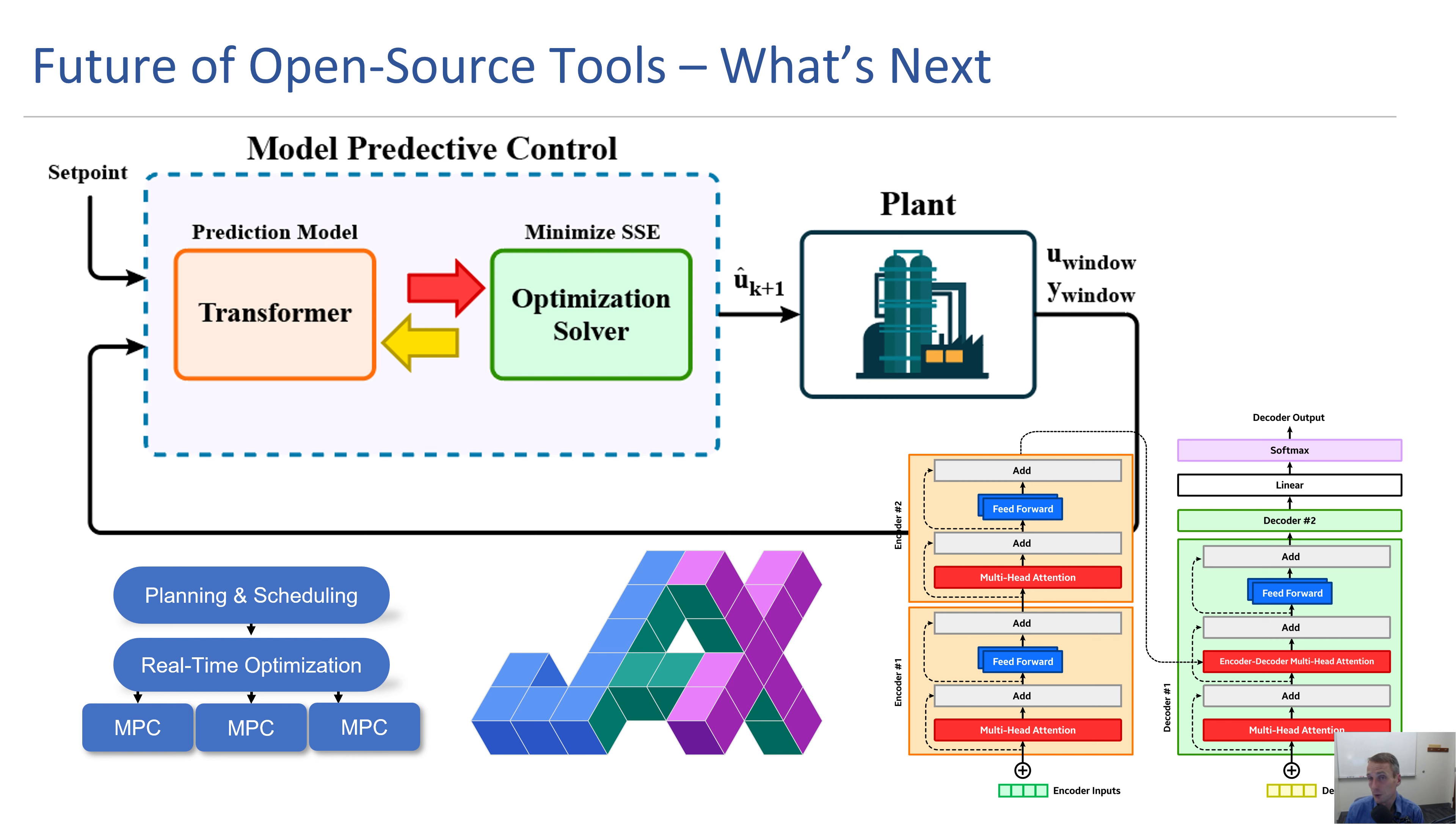As we talk about the future of open source tools, what's next, you have companies such as Google putting their development efforts behind platforms like JAX which are going to be significant players in the future. You see different types of model architectures like transformers that were formally applied to natural language processing being applied in other ways for time series predictions used for model predictive control.